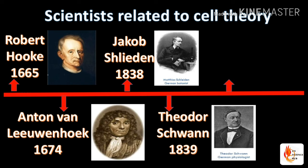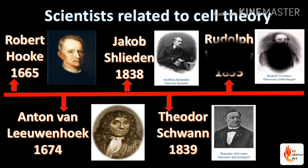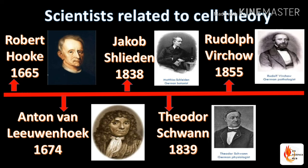Theodore Schwann is a zoologist. He made experiments on animals, and along with the experiments made by Matthias Schleiden, he came to the conclusion and said all organisms are made up of cells. The third person is Rudolf Virchow. He came up with a special idea and said that new cells are formed from old cells.